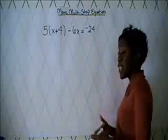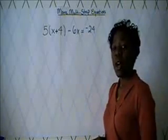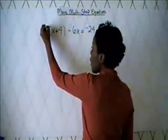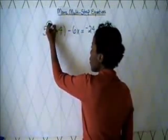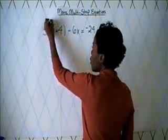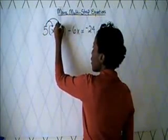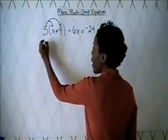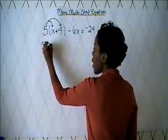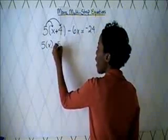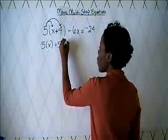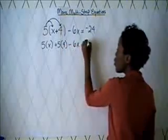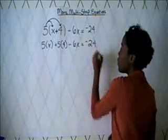As I said in the previous video, we're going to do the distributive property first. The distributive property is taking the outside number, which is 5, and multiplying it by each term inside the parentheses. So we're going to have 5 times x plus 5 times 4 minus 6x is equal to negative 24.